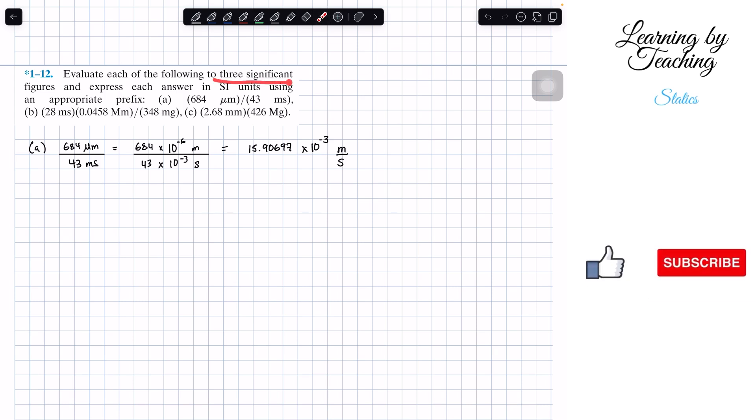So what we have here is that we want three significant figures. So we need to start counting 1, 2, 3. We need to stop at this 9. However, if we have 5 or greater next to it, we need to round up. In this case, we have a 0, so we don't need to round up. We just keep the same number, which is the 9.